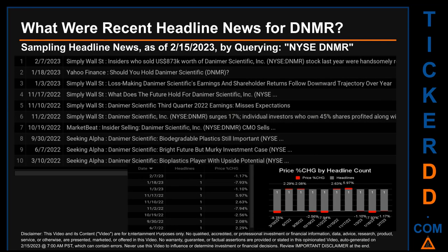Hello, my name is Sam. What were recent headline news for DNMR? Today, Wednesday, February 15, 2023, I sampled one of our news aggregators for the latest headlines for this ticker. I did so by searching specifically by a keyword that may appear broadly in the title or body of discoverable news articles. The keyword I used was a combination of the exchange and the ticker symbol: NYSE DNMR. The results show 10 unique headlines published evenly across 10 unique dates.